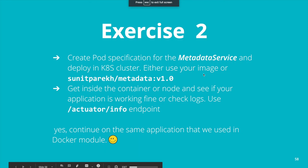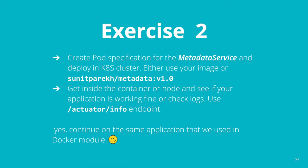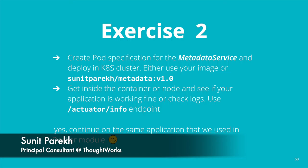In this exercise, we have to create a pod using the same application from the Docker session. We'll create a pod specification for a metadata service. You can use your own image published to Docker Hub, or the published image sunitparek/metadata:1.0. To verify the application is running, you can get inside the container or go to the node by typing minikube ssh, then check the logs or hit the endpoint /actuator/info.